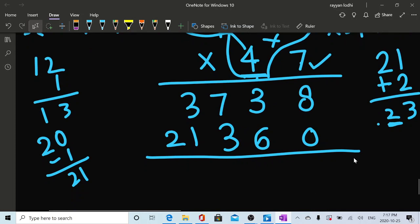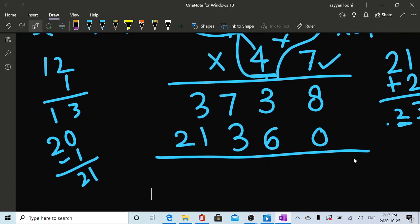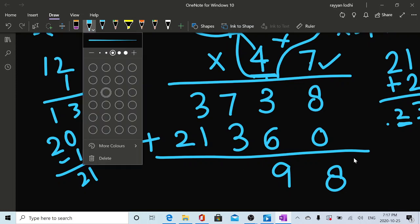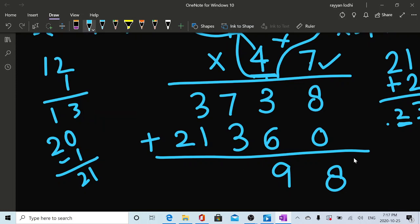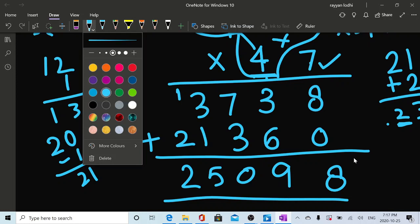Time to write down the answer now. Now we're going to simply add them. Eight, six plus three is nine, seven plus three is ten, one goes here, three plus one is four plus one is five, and there is nothing above two. And this is your answer. Done.